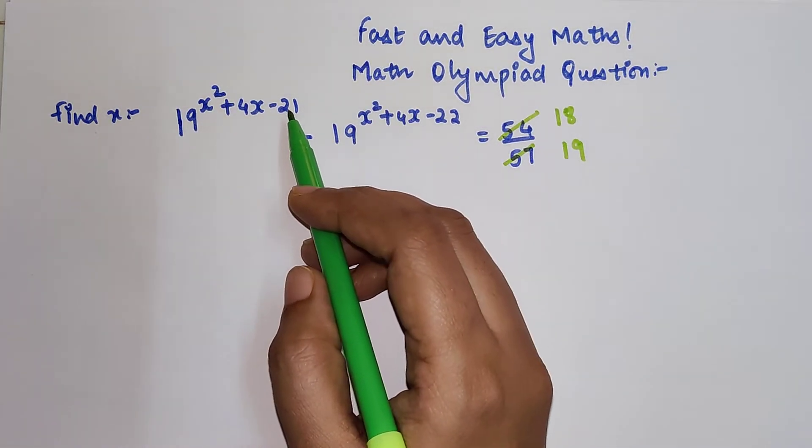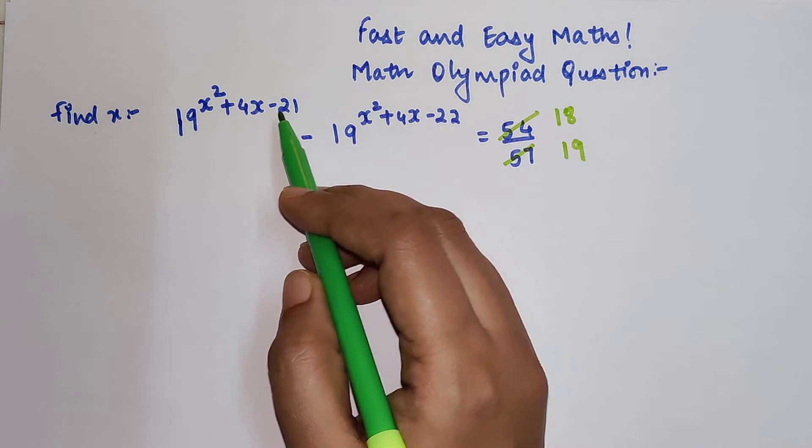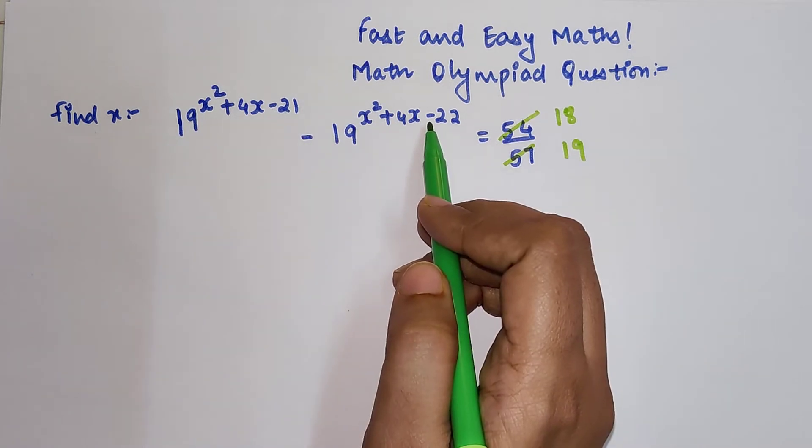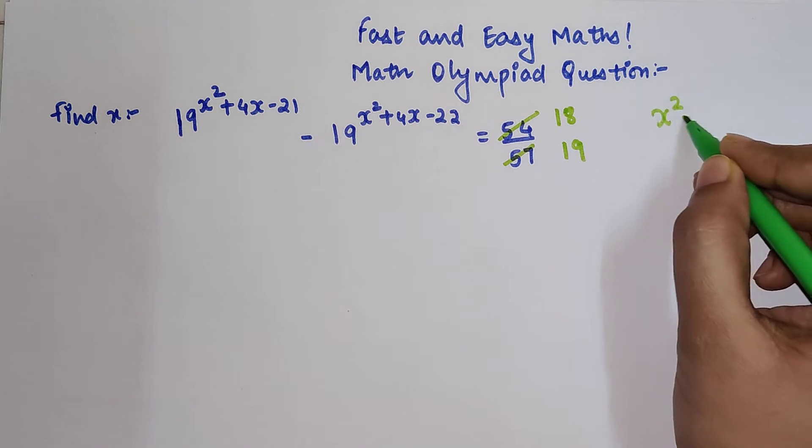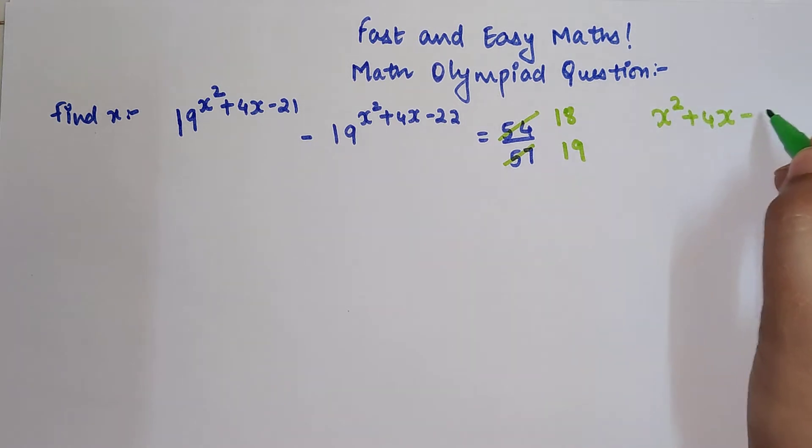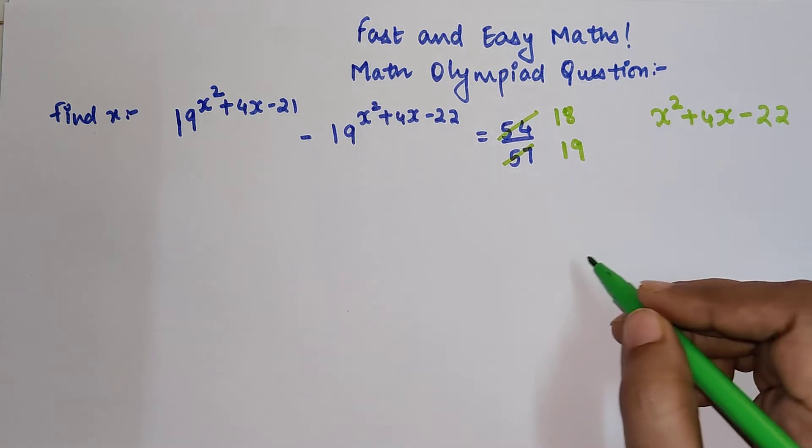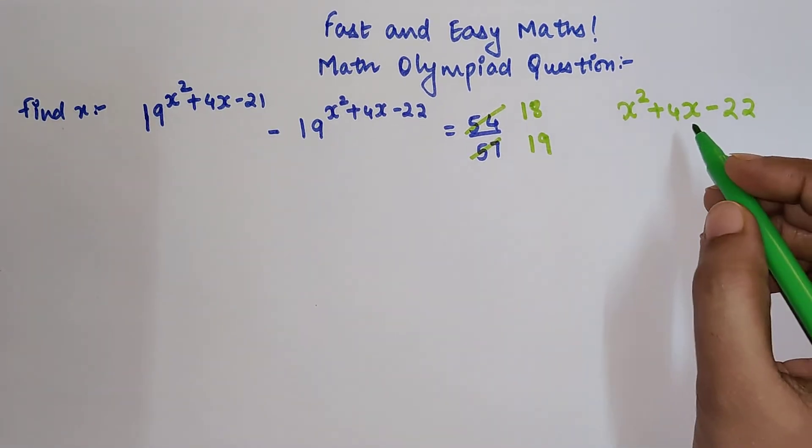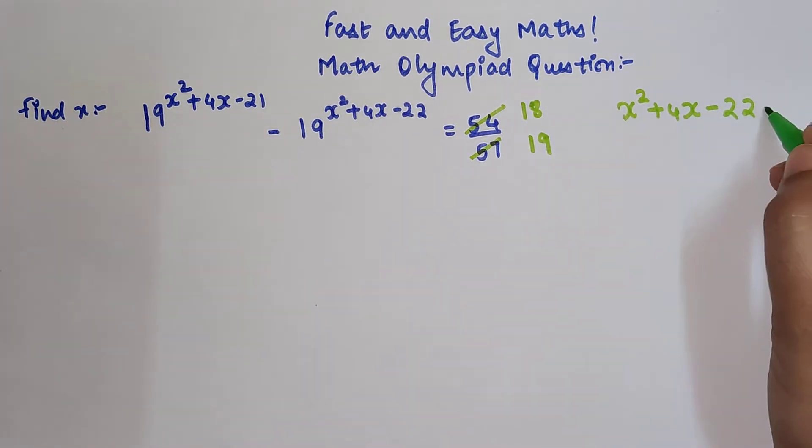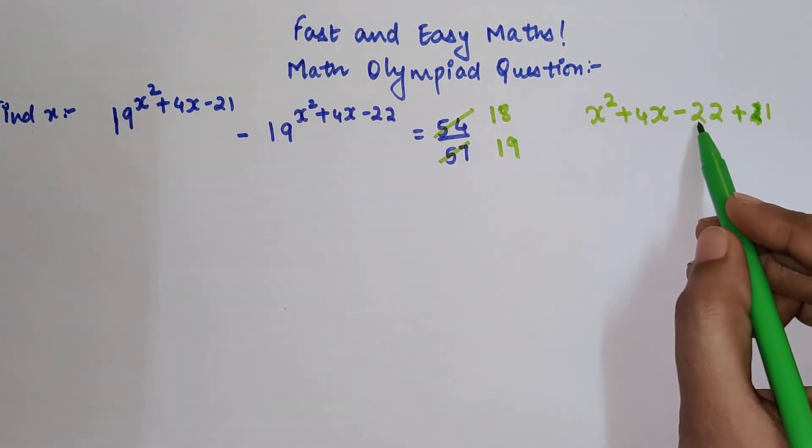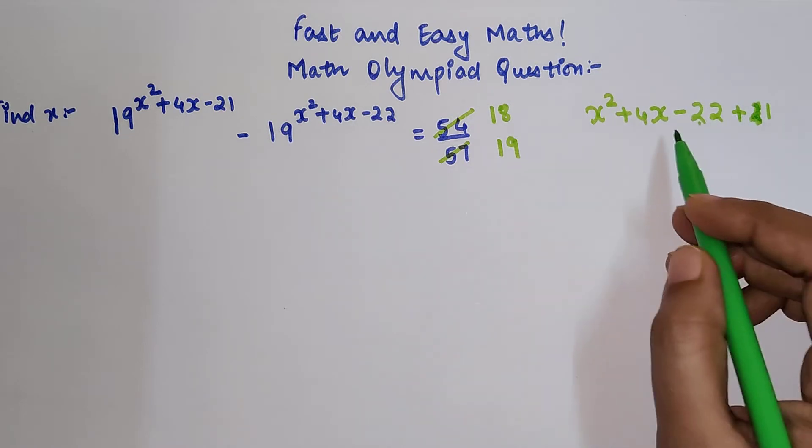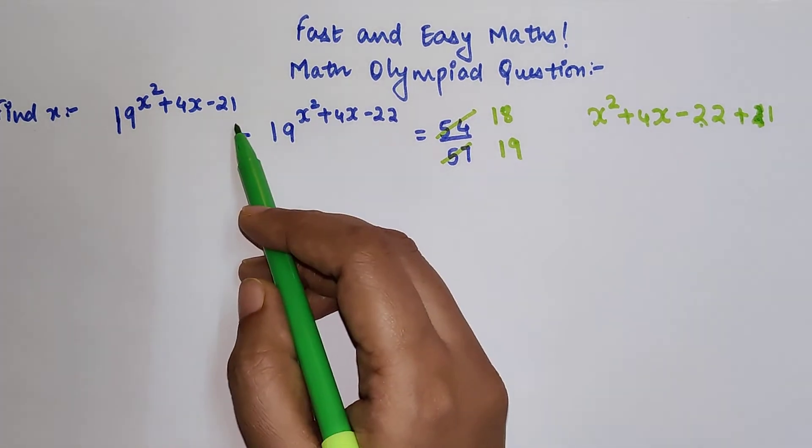x²+4x-21 can be written in terms of -22. How? We can write x²+4x-21 as x²+4x-22+1. Sorry, plus 1. So when we do -22 plus 1, we get -21, and that is what we are looking for.